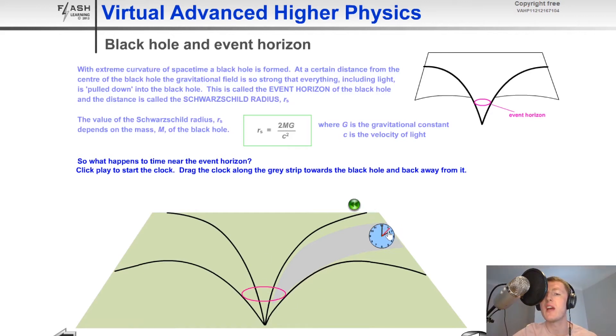So if we click play here, you'll see the red hand on the clock moving round quite quickly. And if we then move this in towards the event horizon, you'll notice that the red hand on the clock is moving much slower. It's still moving, but it's moving much slower.